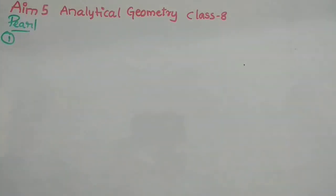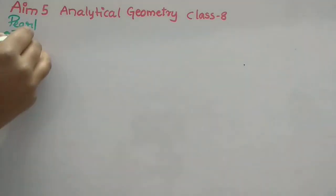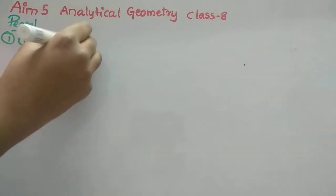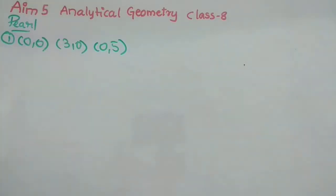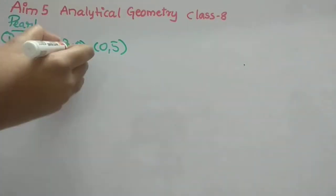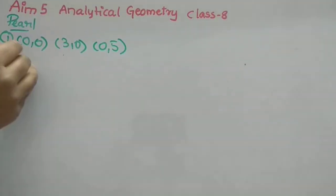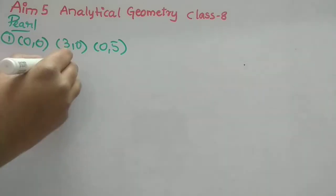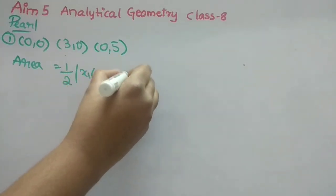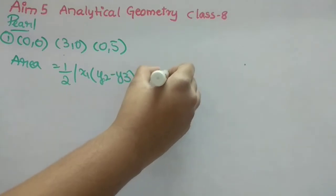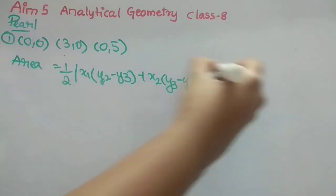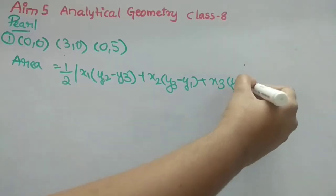First question: we have to find the area of the triangle formed by the points (0,0), (3,0) and (0,5). These are labeled as (x1,y1), (x2,y2) and (x3,y3). The area formula is: half of x1(y2 minus y3) plus x2(y3 minus y1) plus x3(y1 minus y2).